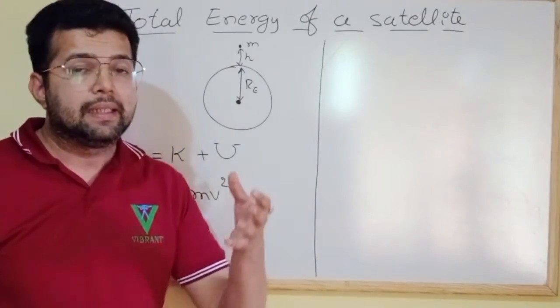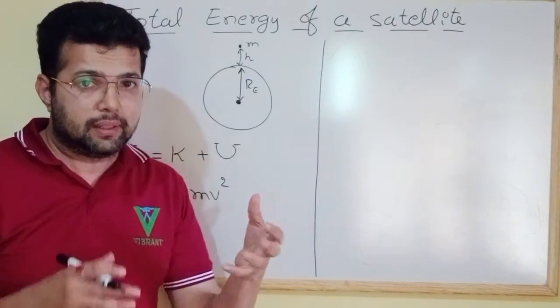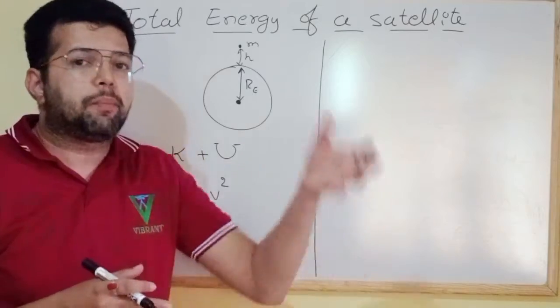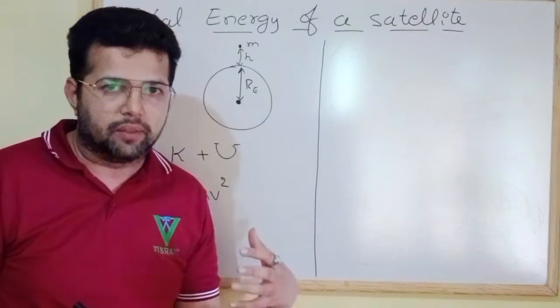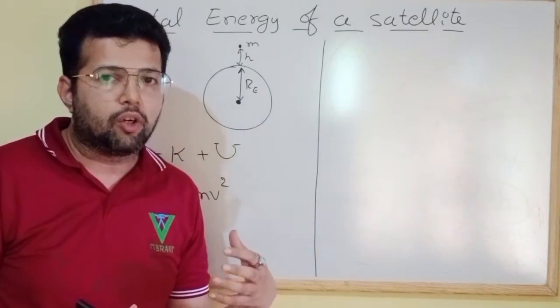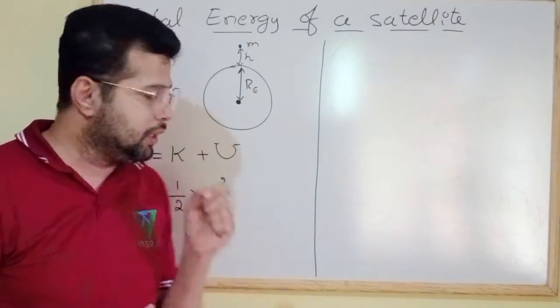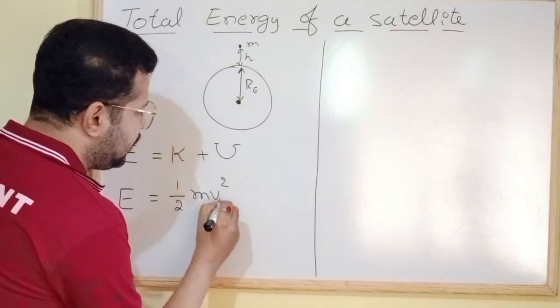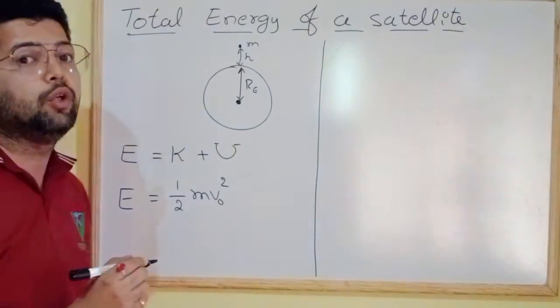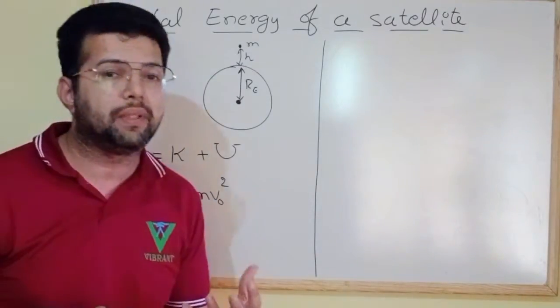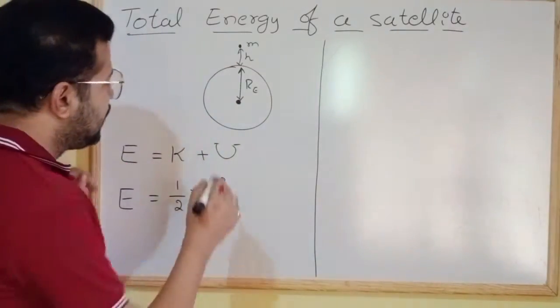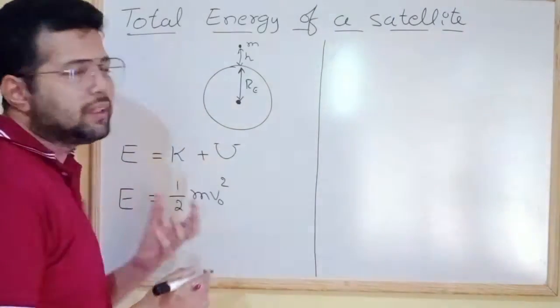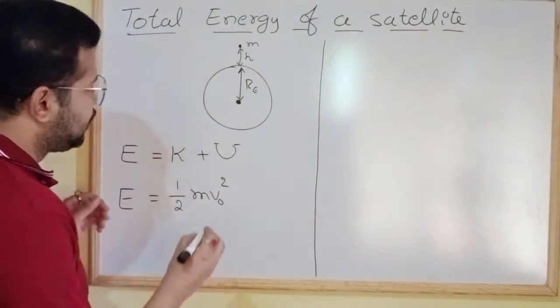What is V? Since a satellite has a particular velocity called orbital velocity, this V I can write as V_O, where V_O stands for orbital velocity, plus potential energy of the satellite.